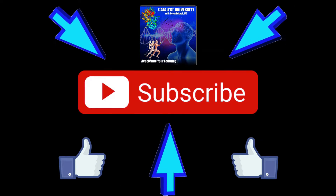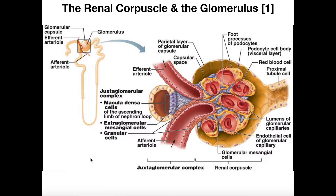Welcome back to Anatomy & Physiology on Catalyst University. My name is Kevin Tokov. Please make sure to like this video and subscribe to my channel for future videos and notifications. During this series of videos, we're going to be discussing the parts of the nephron, and we're going to see how the blood is filtered, ultimately how we reabsorb certain substances, eliminate other substances, and ultimately form urine. That's the job of the kidneys.